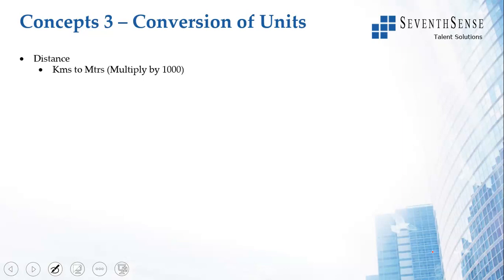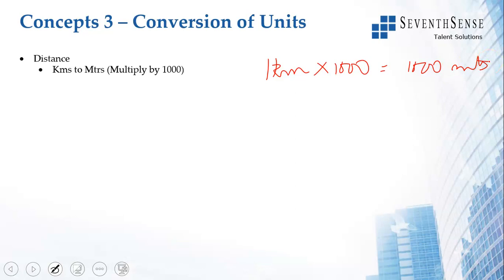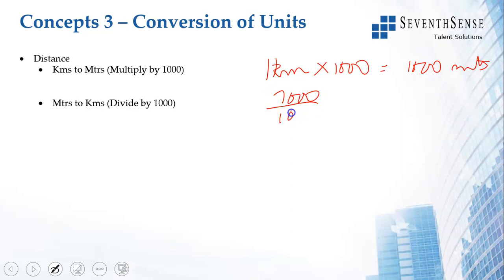Now, units of distance. Kilometers to meters: if the distance is 1 kilometer, that equals 1 × 1,000 = 1,000 meters. Multiply by 1,000. So 0.5 km = 500 meters. If you have to convert meters to kilometers, divide by 1,000.